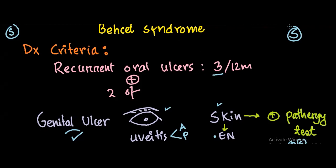Let's talk about Behçet syndrome. It's a vasculitis. What's the diagnostic criteria? It must have a recurrent oral ulcer. What's recurrent? Three times in a 12-month period.